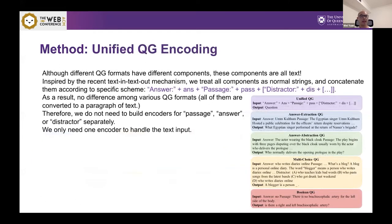First, I may introduce unified QG encoding. It's very simple but effective. We're inspired by text-in, text-out mechanism. We find that although different QG formats have different components, all these components are strings. So maybe we can just concatenate them with some specific prefix. In the right picture, you can see there are some examples. We concatenate these four QG formats into a single paragraph so we don't need to design different encoders for these different QG formats.